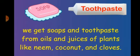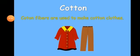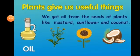We also get clothes from the plants. We get fibers — cotton and jute — from plants. Cotton is the white fiber that is used for making our clothes. These cotton clothes are made from the cotton fiber. Jute is another fiber we get from plants.